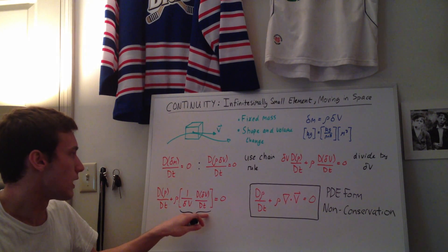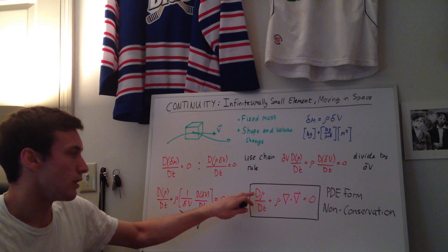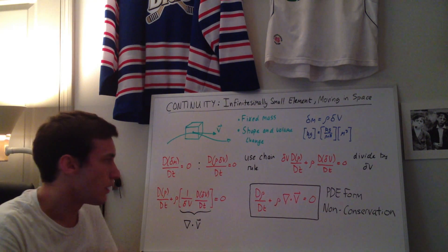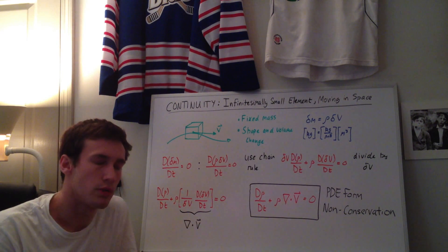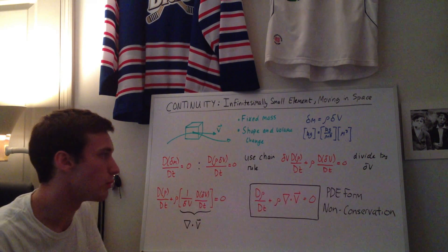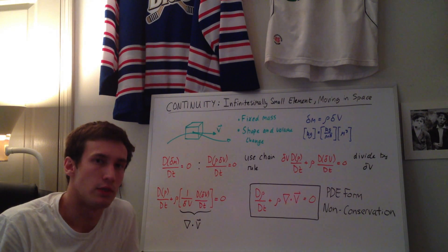you end up getting this final equation, which is the total derivative of the density plus the density times the divergence of the velocity is equal to zero. And this is the partial differential equation, or PDE form, of the continuity equation in non-conservation form.